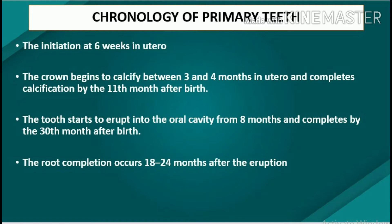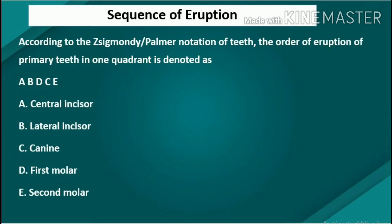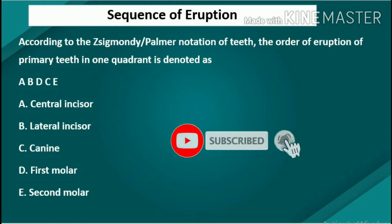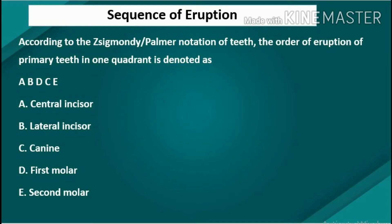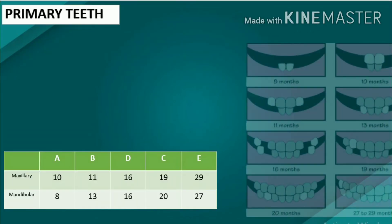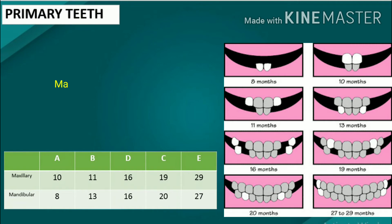The eruption of primary teeth occurs earlier in boys than in girls. Sequence of eruption: according to the Zsigmondy-Palmer notation of teeth, the order of eruption of primary teeth in one quadrant is denoted as A, B, D, C, E — where A is the central incisor, B the lateral incisor, C the canine, D the first molar, and E the second molar.